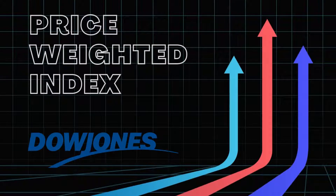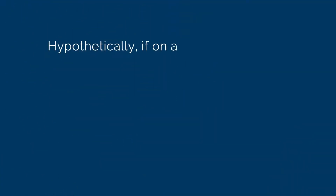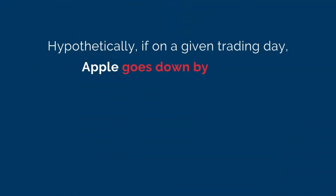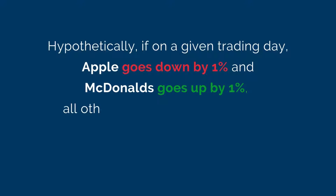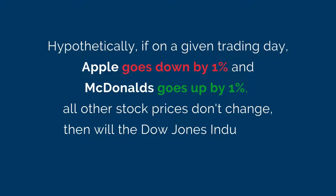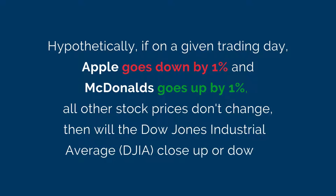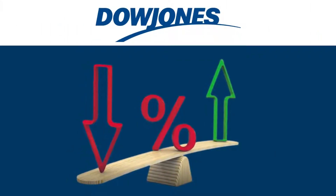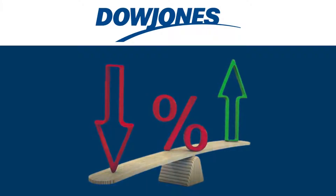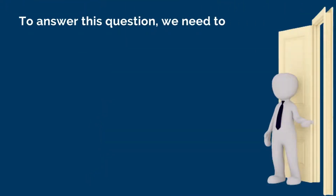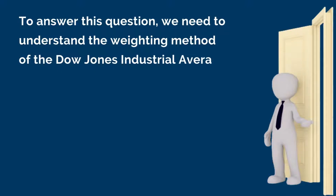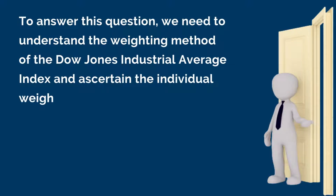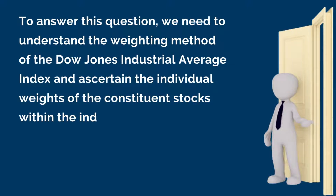Consider this hypothetical: if on a given trading day Apple goes down by one percent and McDonald's goes up by one percent, and all other stock prices don't change, then will the Dow Jones Industrial Average close up or down? To answer this question, we need to understand the weighting method of the Dow Jones Industrial Average and ascertain the individual weights of its constituent stocks.